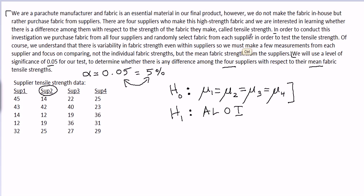It could be that they're all different, it could be just mu one is different than the rest of them and the rest of them are the same. So there's a lot of possibilities when we say at least one inequality.